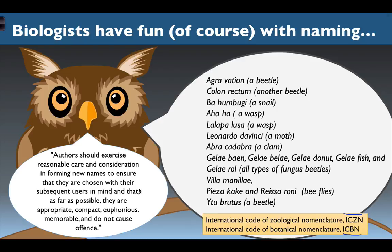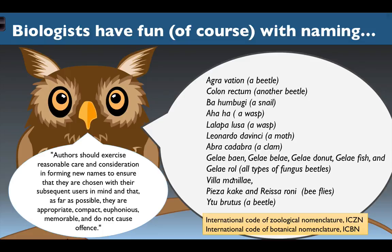The zoological nomenclature covers animals; the botanical nomenclature covers plants. Their rules state that authors should exercise reasonable care in forming new names to ensure they are chosen with subsequent users in mind and are as far as possible appropriate, compact, euphonious, memorable, and do not cause offense. Organisms are very diverse, and sometimes their characteristics just present themselves in ways that lead to fun-sounding names.